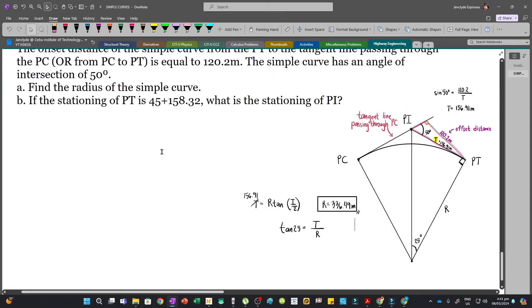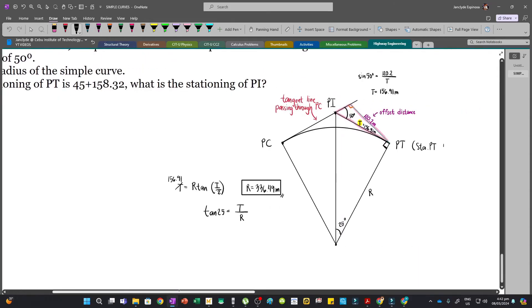Now for letter B, we are given the stationing of PT, which is 45 plus 158.32. So we're gonna solve the stationing of PC first, because this is what we need to get the stationing of PI. Now by the way, be careful here. Some people, when they have the stationing of PT, they will just subtract the tangent distance to get the stationing of PI. However, that's incorrect. If you want the stationing of PI, you still have to get the stationing of PC first, and then you will add the tangent distance so that you can get the stationing of PI.